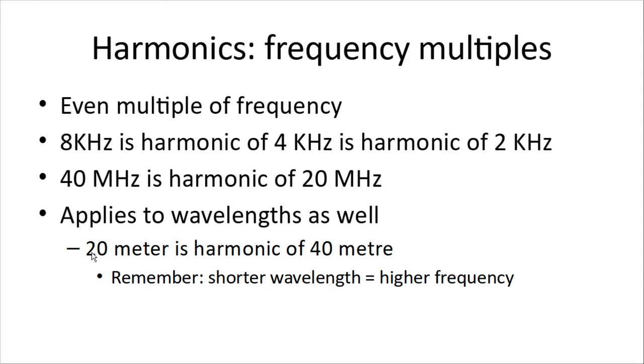Harmonics are multiples of the frequency, of a base frequency. So, 8 kilohertz is a harmonic of 4 kilohertz, is a harmonic of 2 kilohertz. 40 megahertz is a harmonic of 20 megahertz. And that applies to wavelengths as well. So, 20 meter is a harmonic of 40 meter. Remember, shorter wavelength is higher frequency.